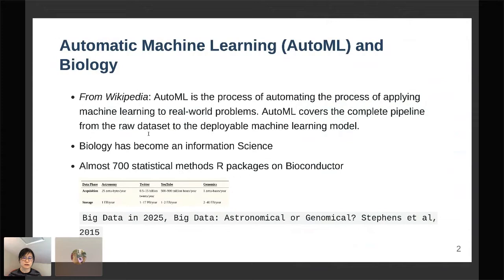Automatic machine learning, also known as AutoML, has a lot of definitions. According to Wikipedia, AutoML is the process of automating the process of applying machine learning to real-world problems.